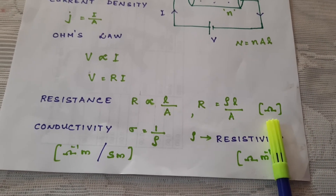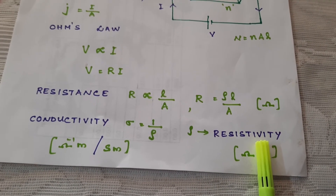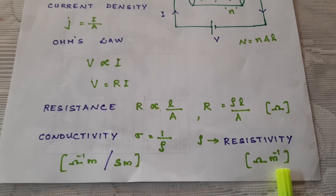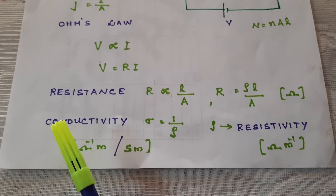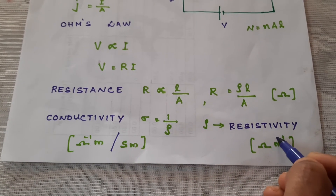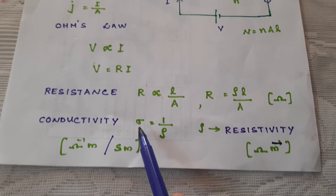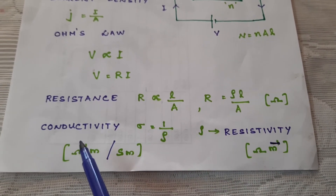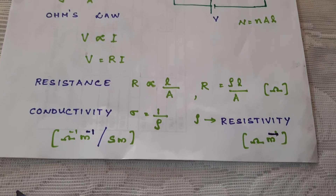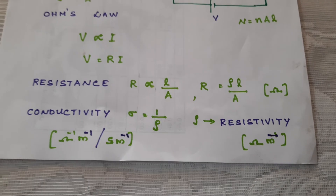The unit of resistance is ohm. The constant ρ is known as resistivity, and its unit is ohm·meter. The unit of resistivity is ohm·meter. The reciprocal of resistivity is known as conductivity, and the unit of conductivity is ohm raised to minus 1 meter raised to minus 1, also written as siemens per meter.